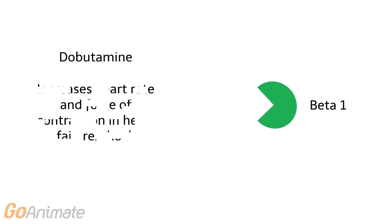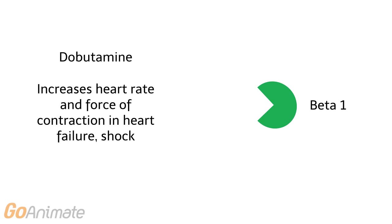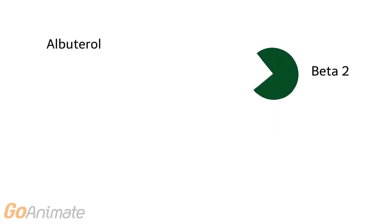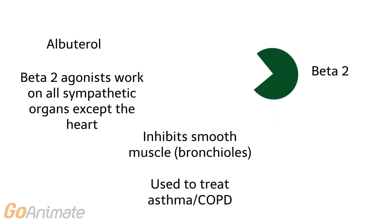Dobutamine affects the beta-1 receptors and works to increase the heart rate and force of contraction in heart failure and shock. Albuterol affects the beta-2 receptors. Beta-2 agonists affect all sympathetic organs except the heart. Albuterol inhibits smooth muscles, as in bronchodilation, and can be used to treat asthma and COPD.